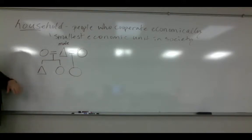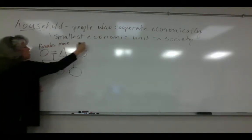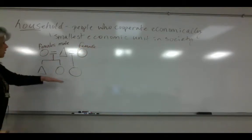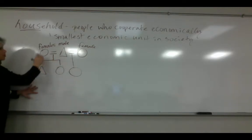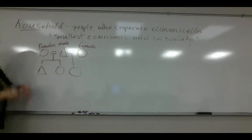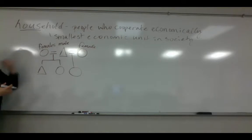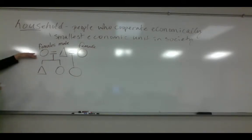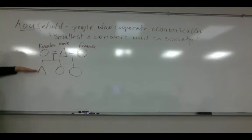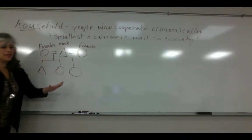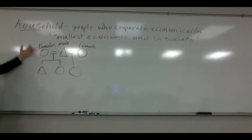I'm drawing this because it represents the people who participate economically with each other and form a household. In Yanomami society, there might literally be no boundary between one hut and the next — they share a roof. Another household with one man and one or multiple wives might exist right next to them. These people are the smallest economic unit we can measure in society. This structure is called a nuclear family.